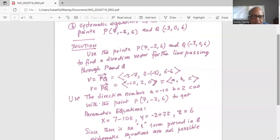So again, x is equal to x1 plus A t, y equal to y1 plus B t, and z is equal to z1 plus C t, but C being 0, z is just equal to 6.